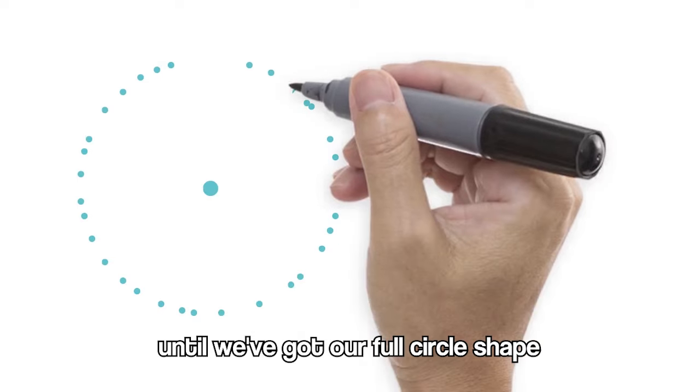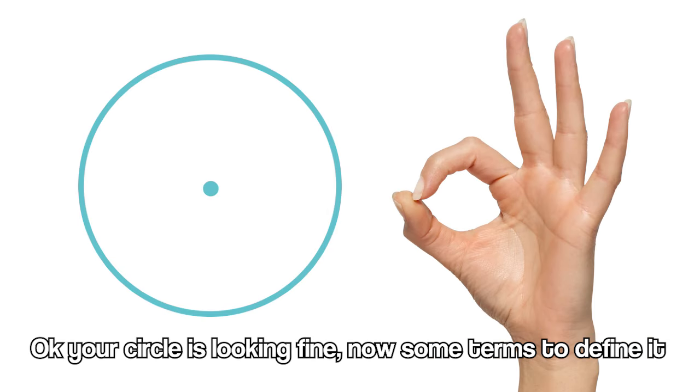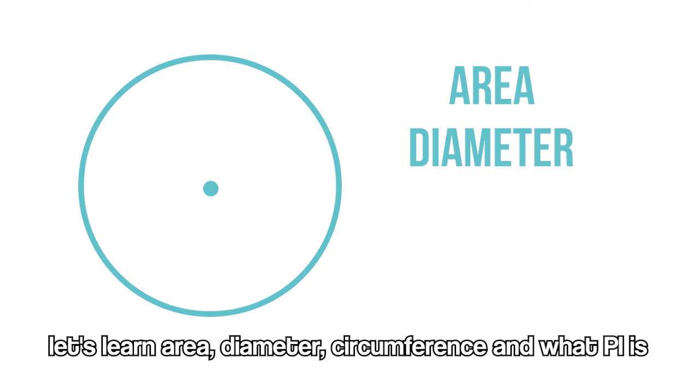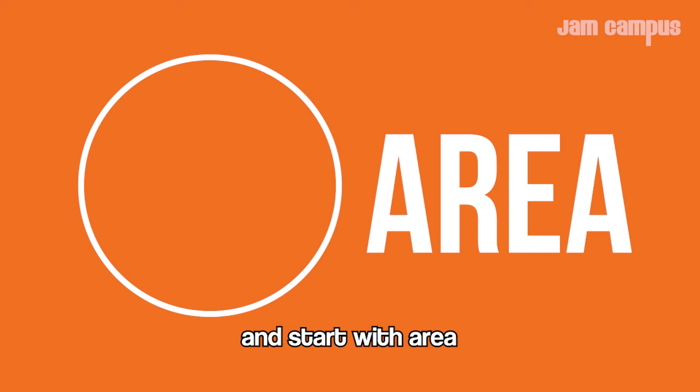Just keep plotting and plotting until we've got our first circle shape. Okay, your circle's looking fine, now some terms to define it. Let's learn area, diameter, circumference, and what pi is, and start with area.